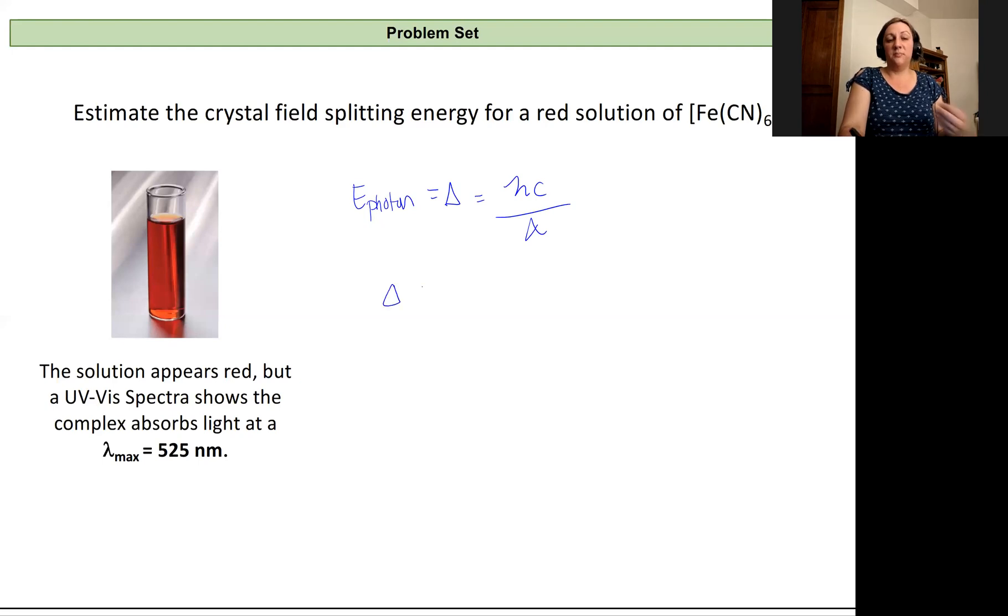And so that crystal field splitting energy for this iron cyanide complex will be equal to that Planck's constant 6.626 times 10 to the negative 34th joules seconds times the speed of light 3.00 times 10 to the 8th meters per second all divided by that wavelength which is 525 nanometers.